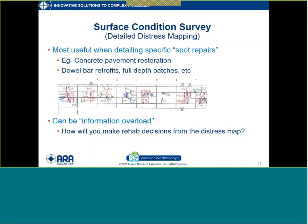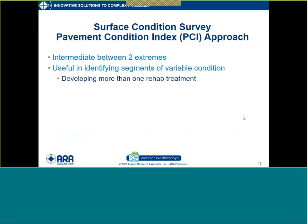Distress mapping can be useful for concrete pavement restoration, where it's common in the plans to actually delineate exact locations of repairs and repair types like dowel bar retrofits and full depth patches. On this drawing from an actual project, the squiggly lines are transverse cracks and the shaded areas are full depth slab replacements. This was very useful for final design, but if rolled out on a conference table it might be 30 feet long — you'd border on information overload. So I think you need different types of information to decide what rehab treatment is necessary.